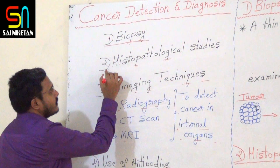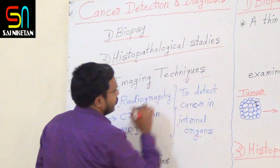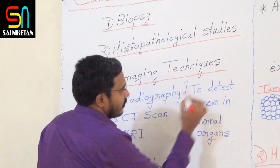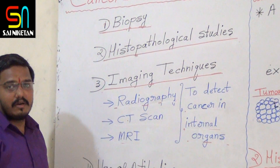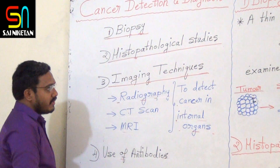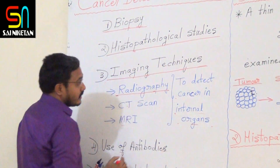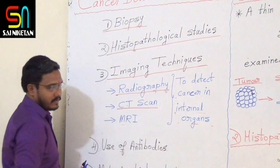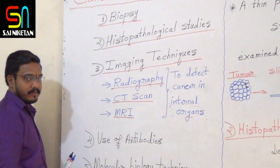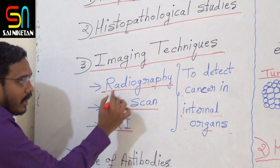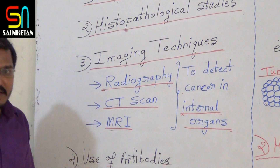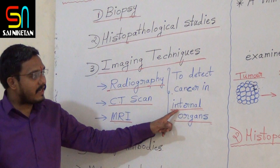The second method is histopathological studies. Third one is imaging techniques, where we get the images of the suspected organs. Under imaging techniques: the first is radiography, second is CT scan, and third is MRI. These three are used to detect cancers in internal organs. Remember this — imaging techniques are used to detect cancer in internal organs.